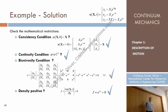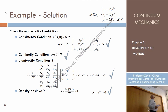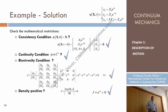What happens if I replace 0 here? This function e to the 0 is 1. E to the minus 2 times 0 is 1. This is 1, and this term drops. So finally, replacing 0, what do I obtain? Exactly x1, x2, x3. So that's fulfilled. That means that this could be equations of motion in canonical form, because x1, x2, x3 can be identified as the coordinates at reference time t equals 0.